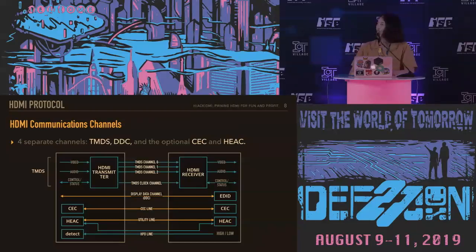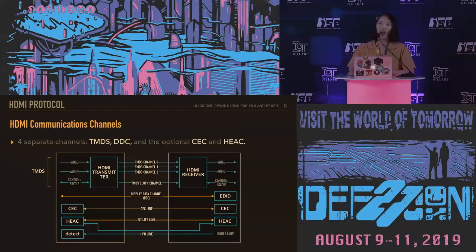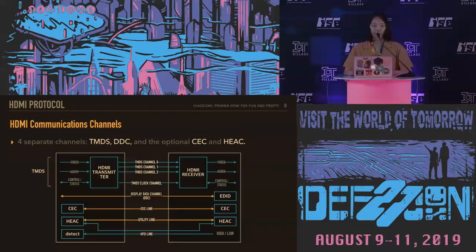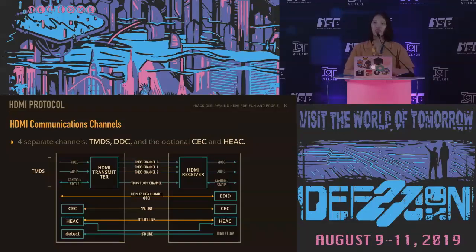Looking at the TMDS part of the figure, you can see the video and audio data on both the input and output parts. TMDS is used to carry audio and video data. The DDC channel is used by an HDMI source to determine the capabilities or characteristics of the sink by reading the EDID data structure. HDMI sources are expected to read the sink's EDID and deliver audio and video formats that are supported by the sink.